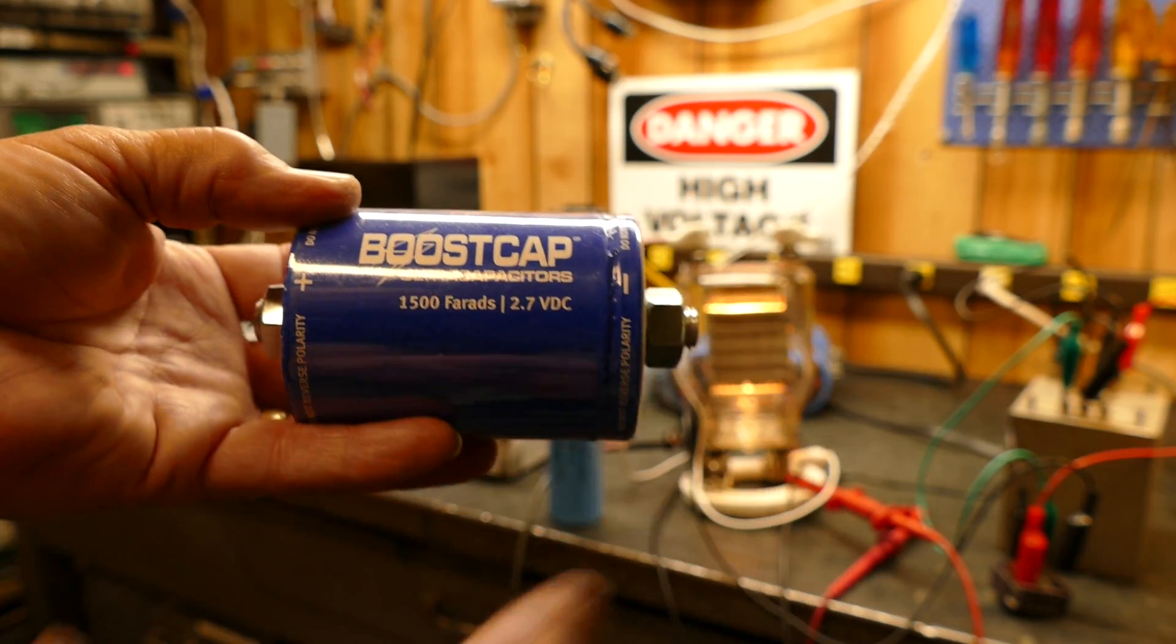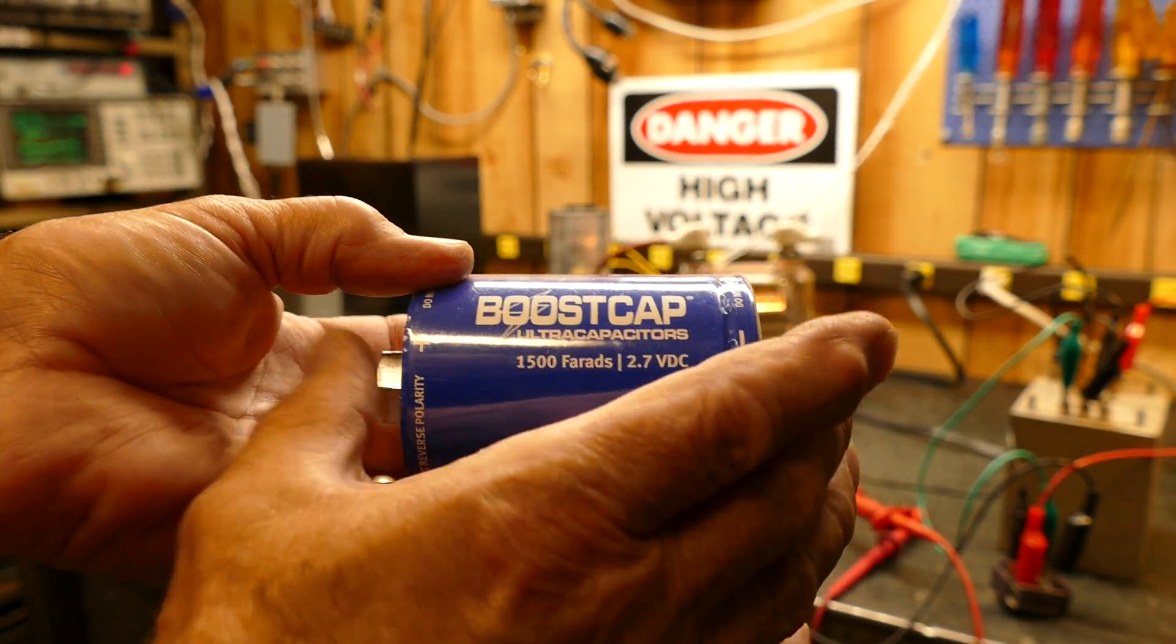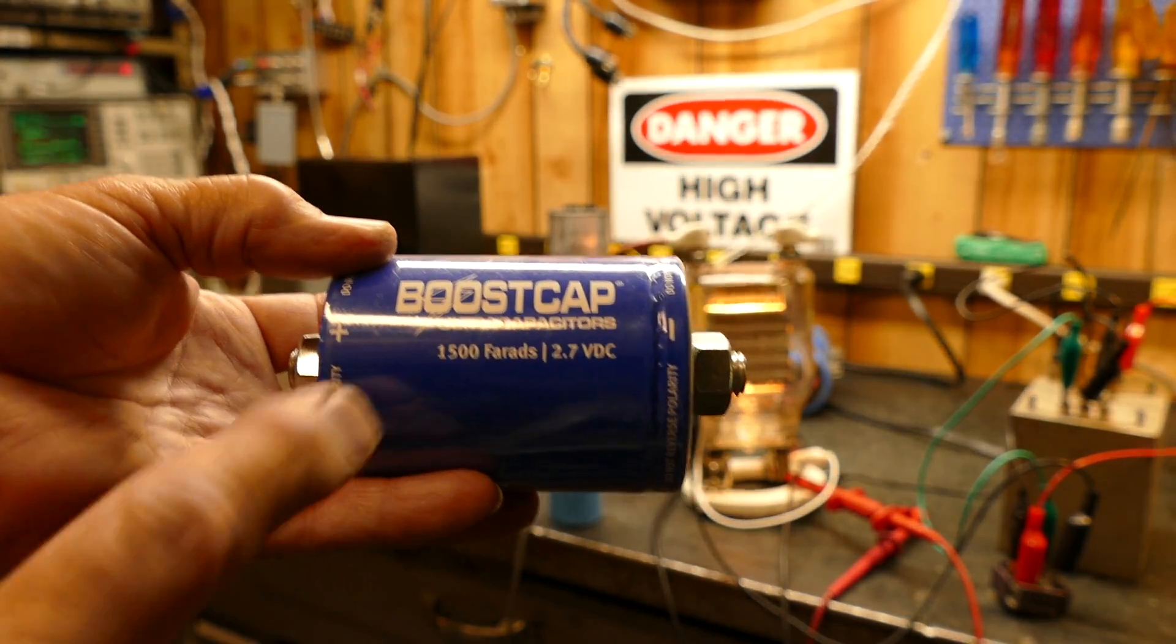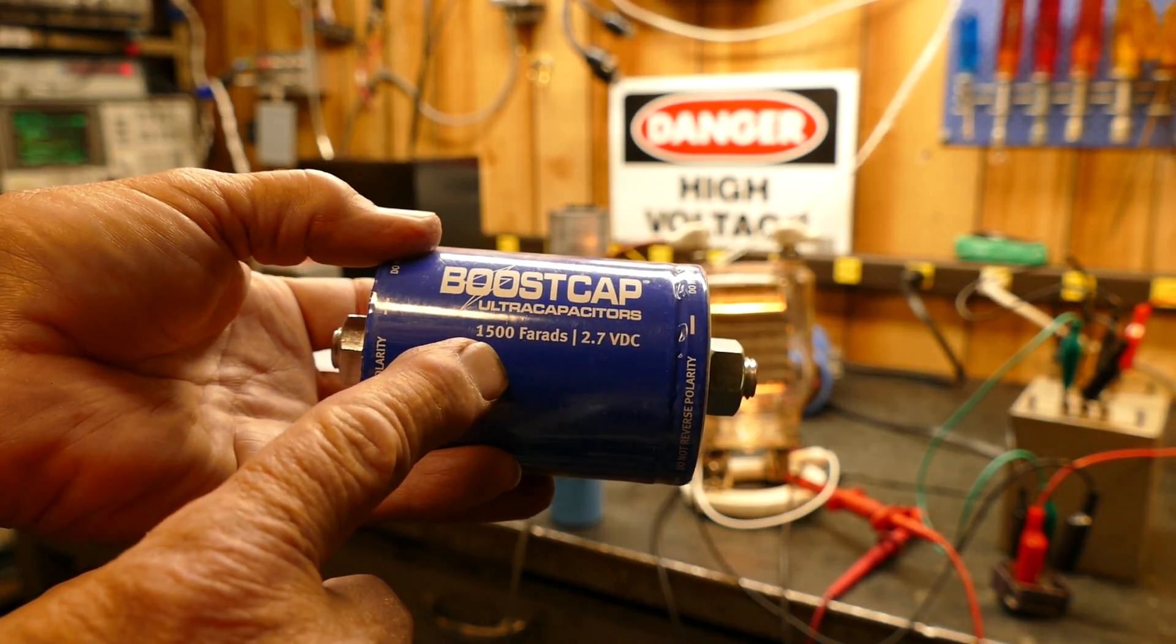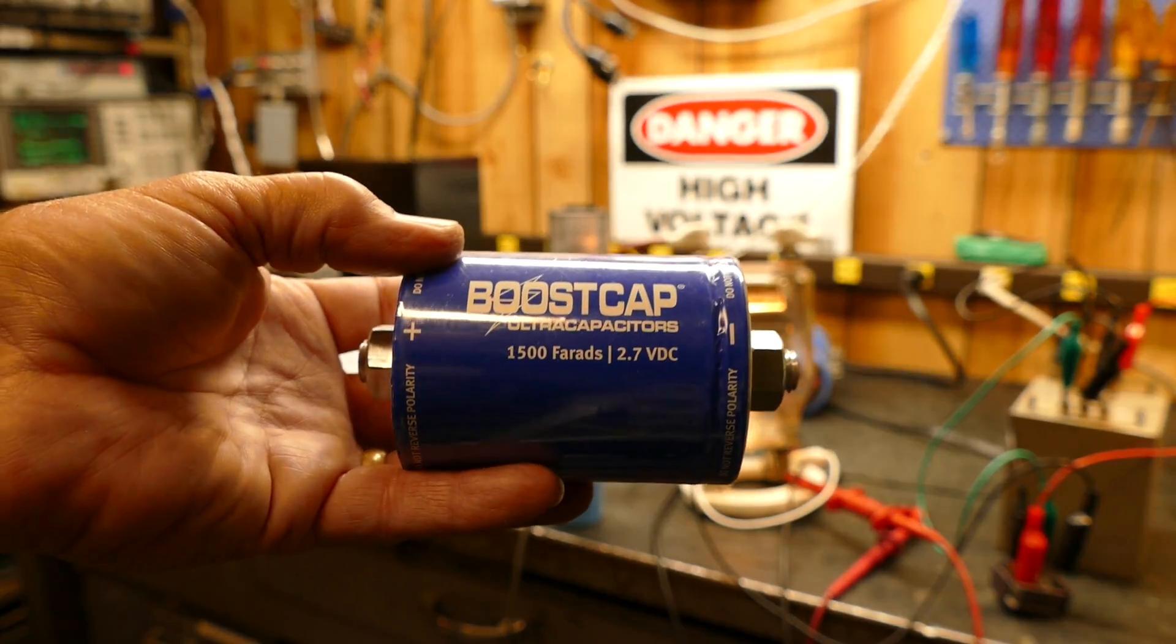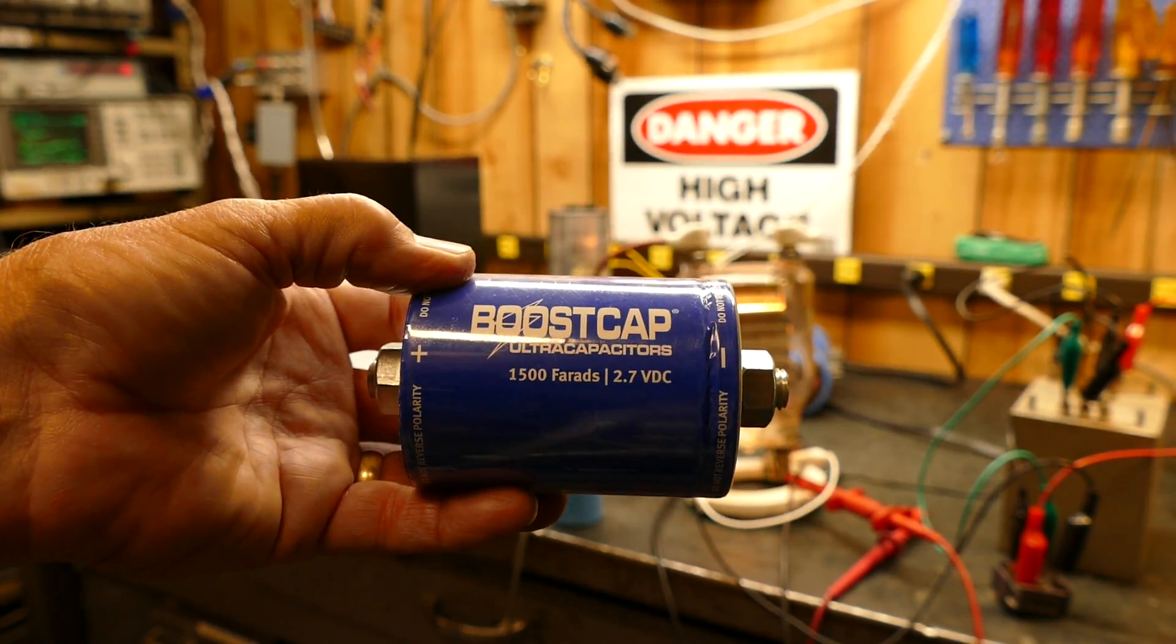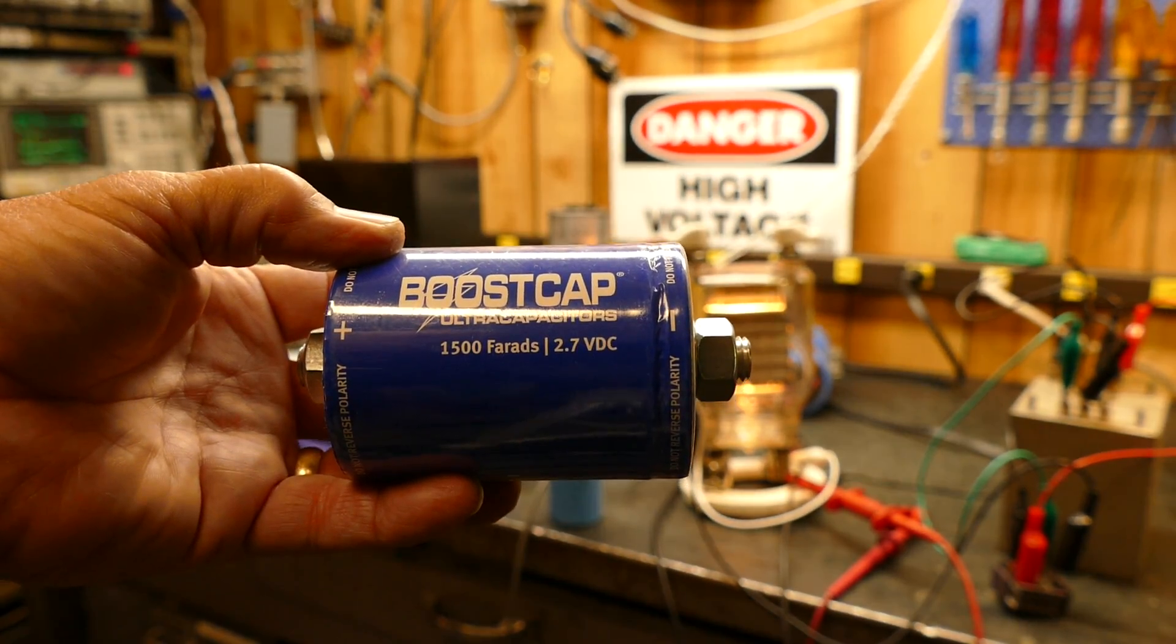You have to do T equals RC. The time to get to 63% of the applied voltage is T equals R, which would be the resistance, the series resistance in the circuit charging it, and C. If it was 1 ohm, it would be 1500 seconds to charge this thing to 63% of its capacity.